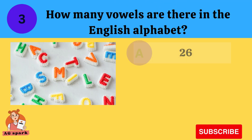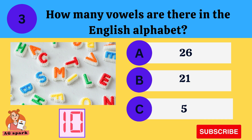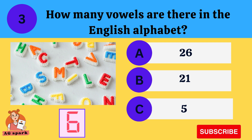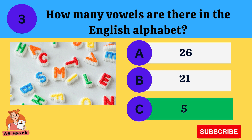How many vowels are there in the English alphabet? 26, 21, 5. Answer: Five.